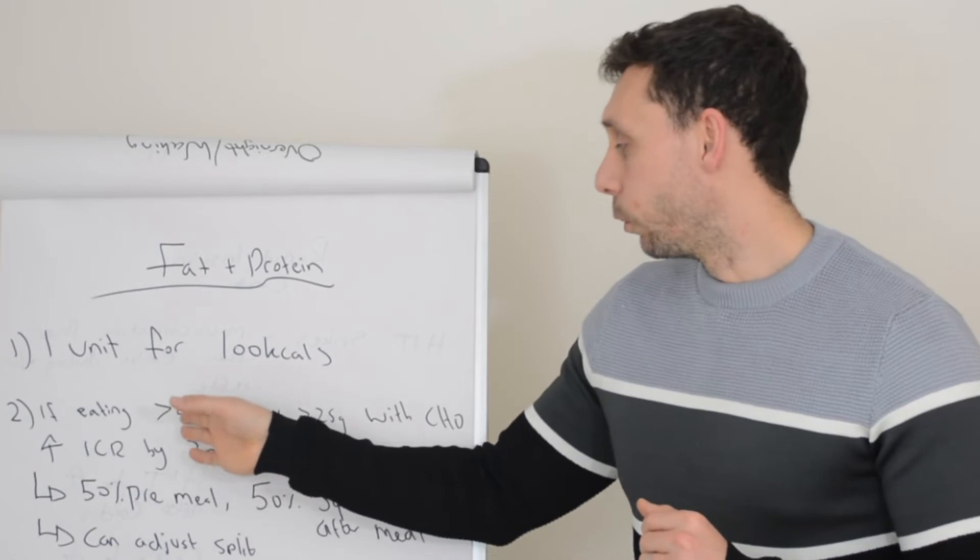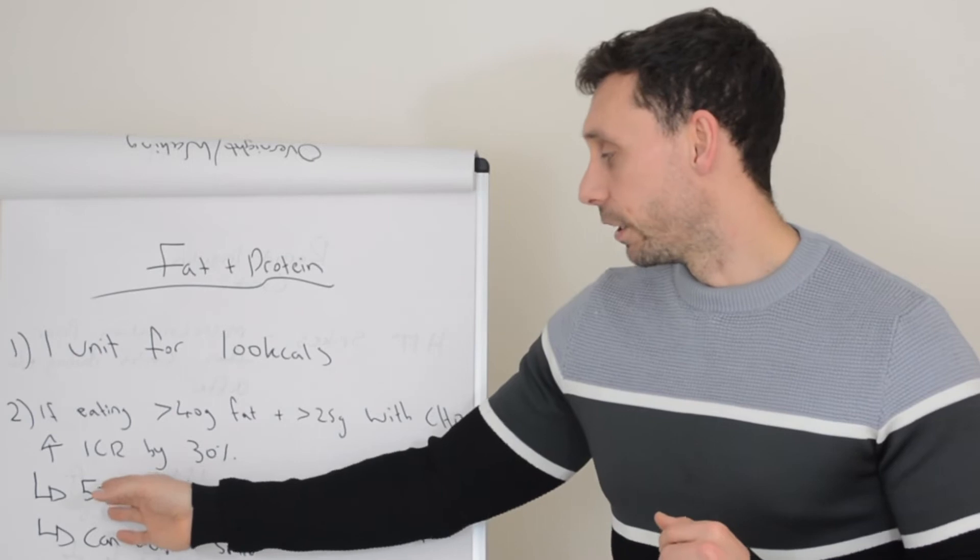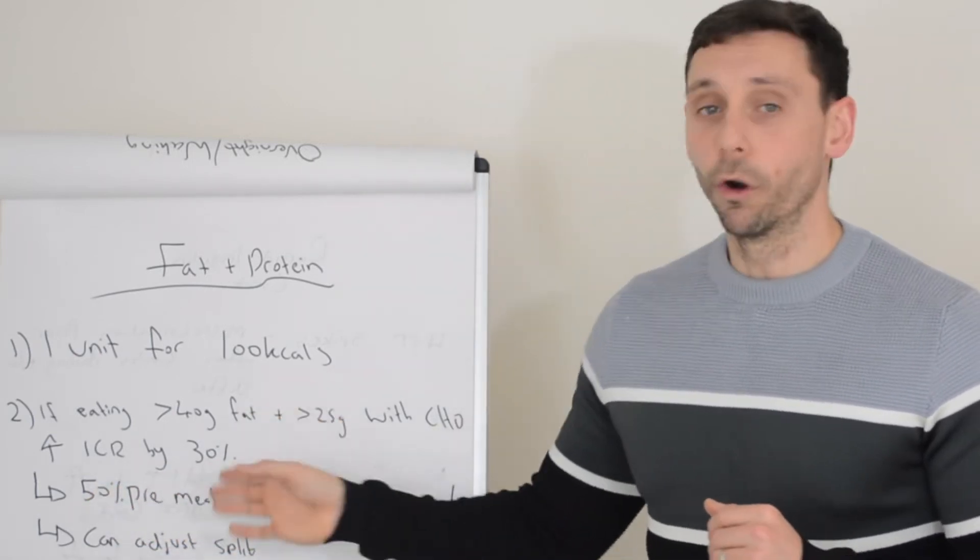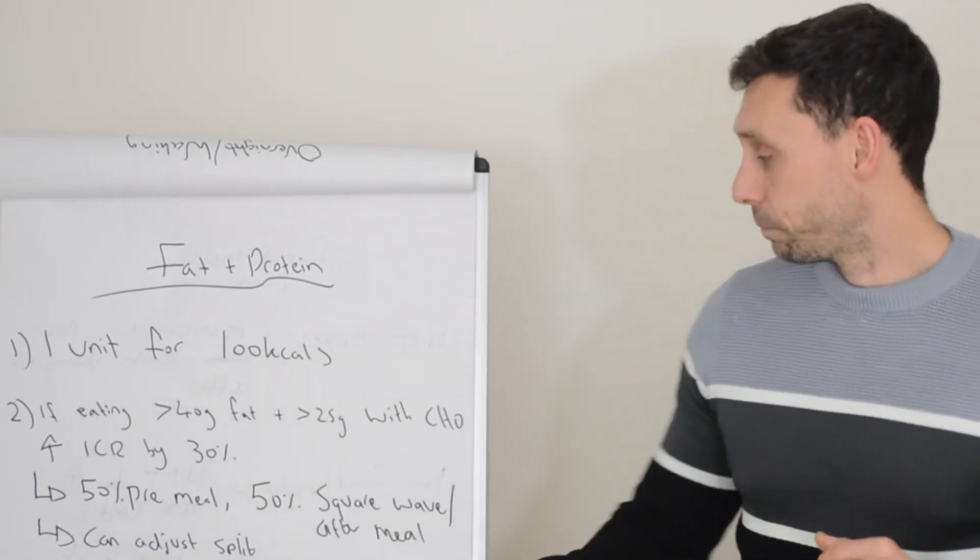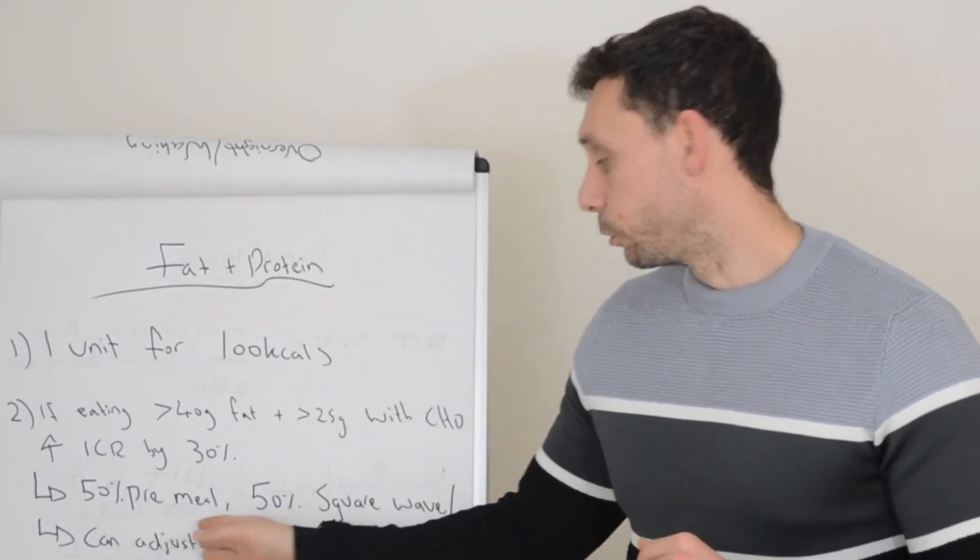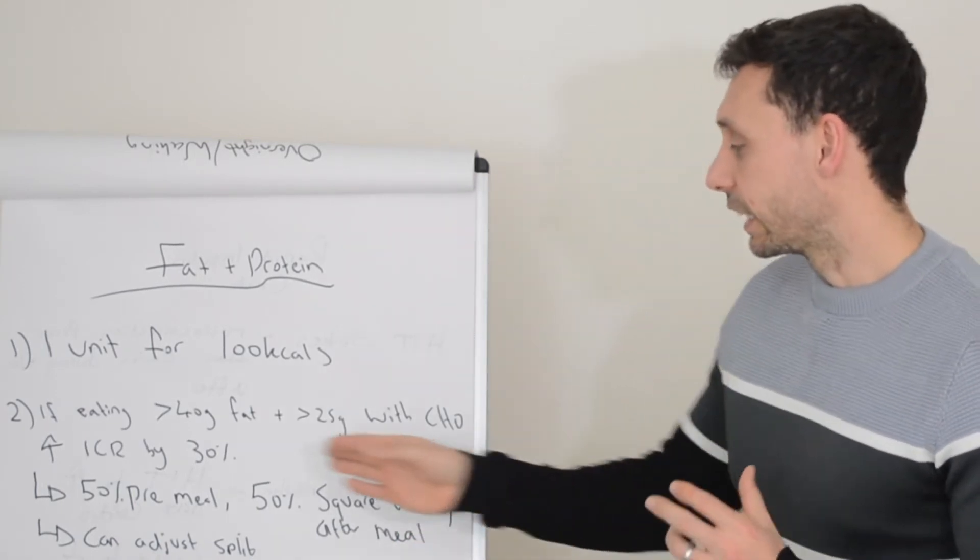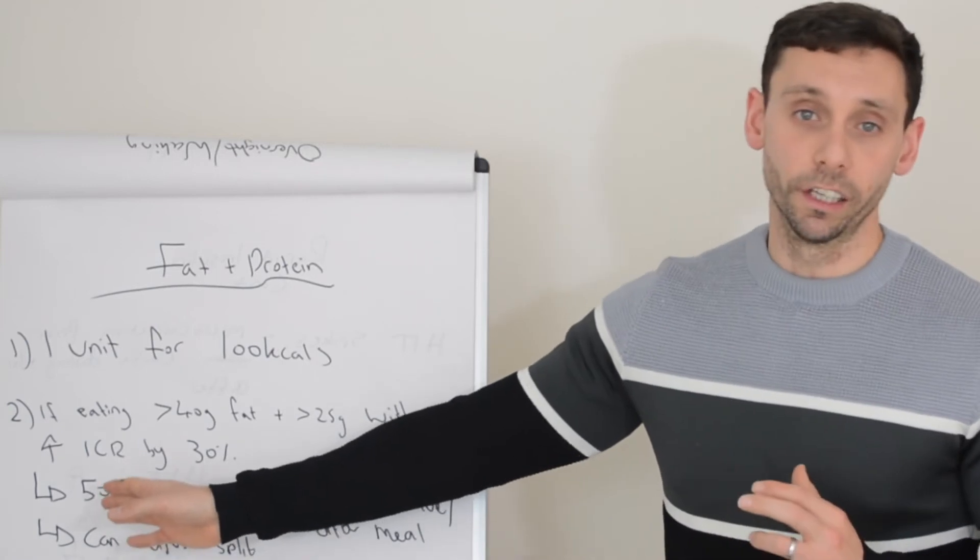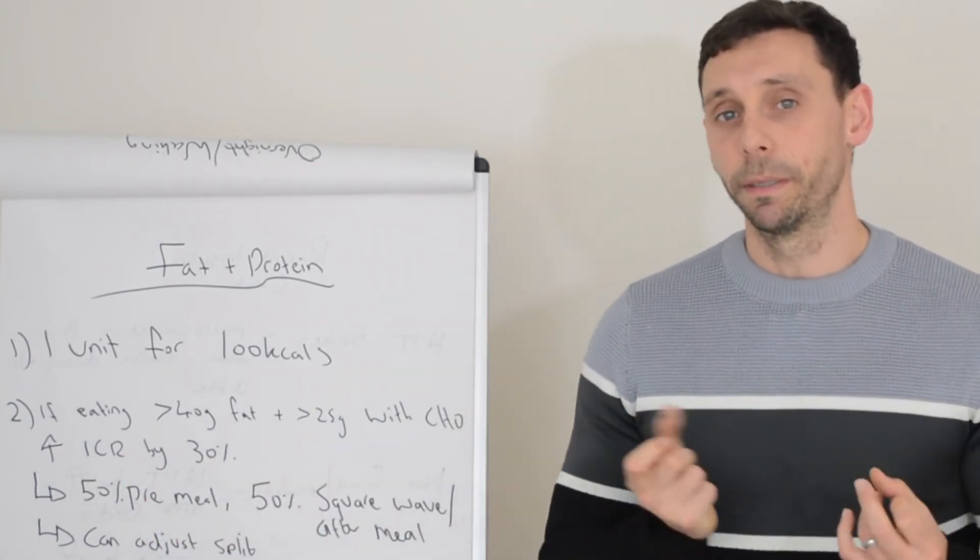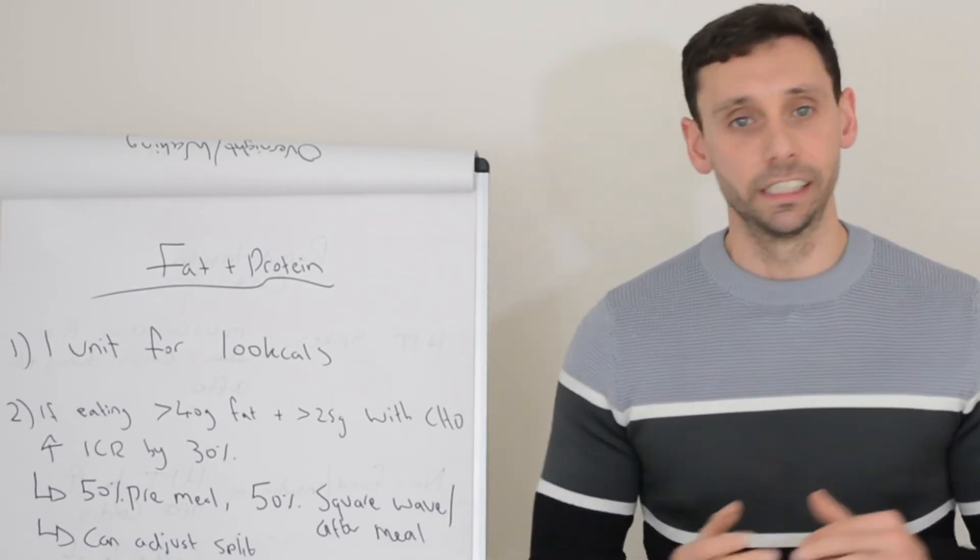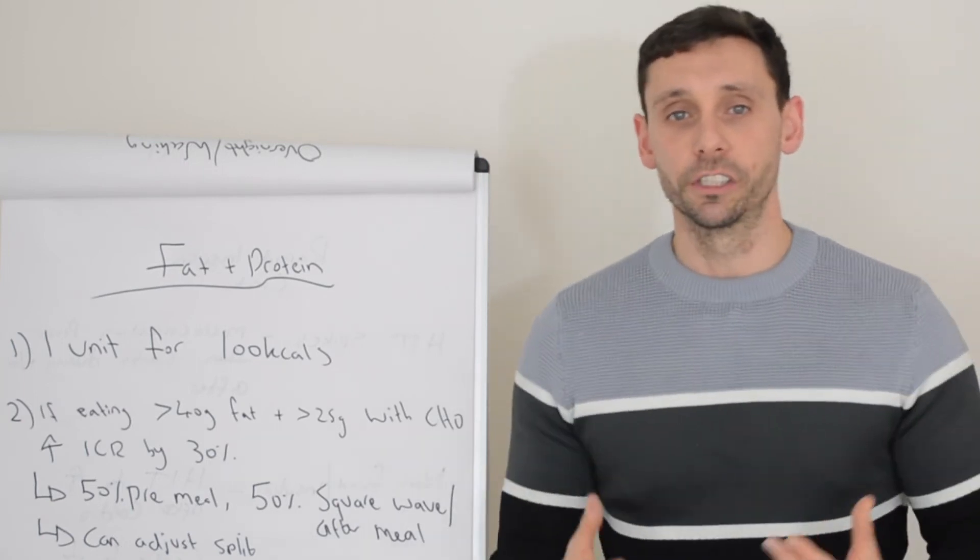Now in order to compensate for the delayed absorption for protein and fat, it's advised that you do 50% of your bolus pre-meal and then 50% with a square wave after the meal if you're on a pump, or you can just do your usual split. So 50% before, 50% after. Now that doesn't mean that it's guaranteed to be 50% that's absorbed initially and then 50% afterwards. You can play around with the splits depending on what the glucose levels do. So you might take 60-40, 70-30, and that's where the glucose patterns really lead you in terms of what to do.